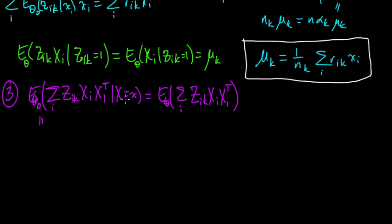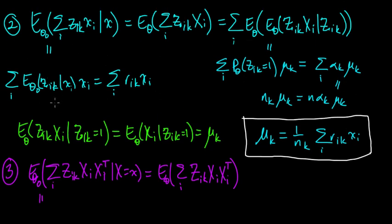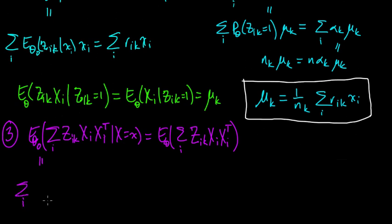The expectation moves through. Just like before in the case of the vector-valued one, we just get the conditional expectation of zik given x. These x's come out, and we just get the sum over i, rik, xi, xi transpose. The random xi's get set to little xi because of the conditioning. So that one's easy.